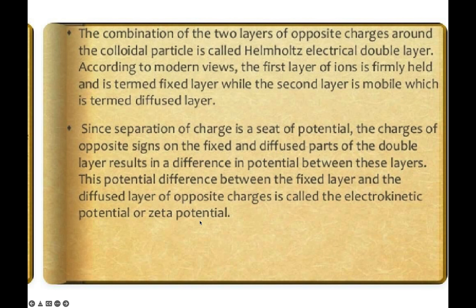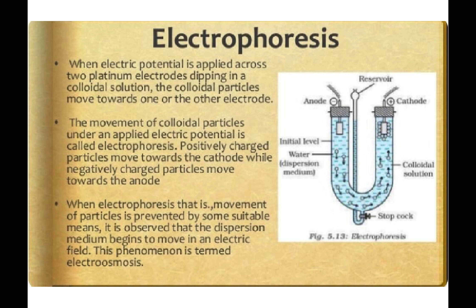Electrophoresis is the movement of colloidal particles when an electric potential is applied across two platinum electrodes dipping in a colloidal solution. Positively charged particles move towards the cathode and negatively charged particles move towards the anode. When electrophoresis is prevented by suitable means, the dispersion medium itself moves towards the electric field — this phenomenon is called electroosmosis.